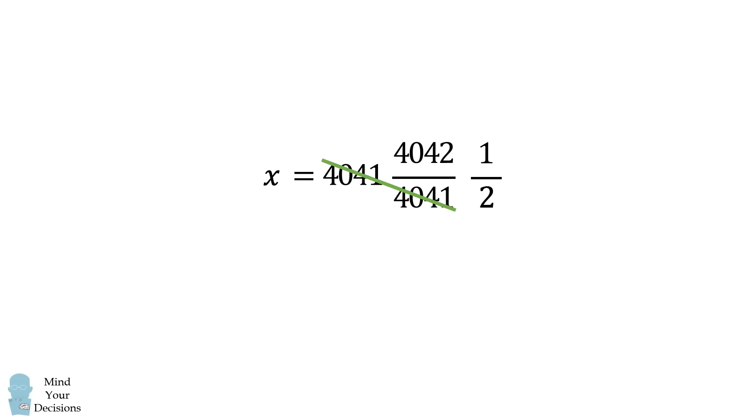So we simply need to simplify this. 4041 will cancel out. And then we have 4042 divided by 2, which is equal to 2021. And that's the answer to the problem.